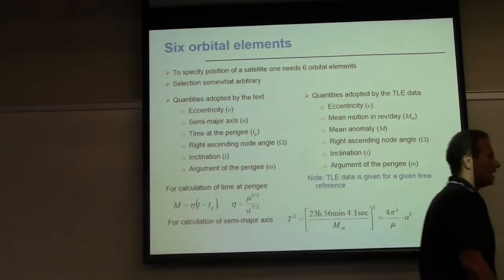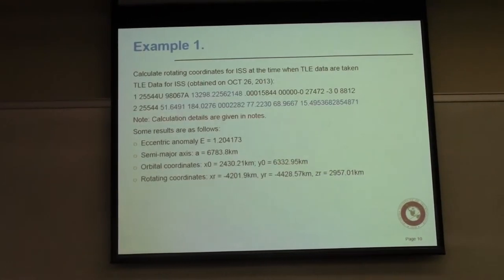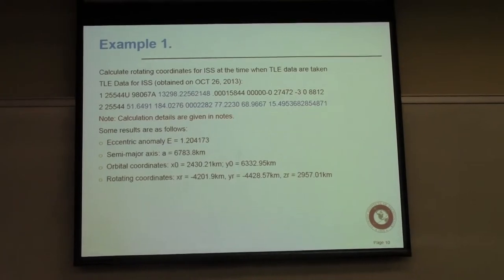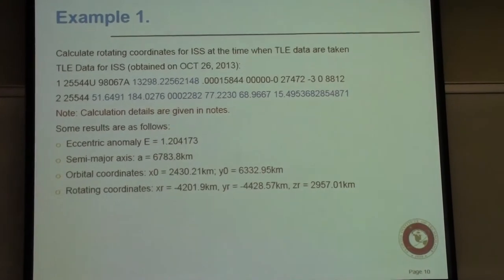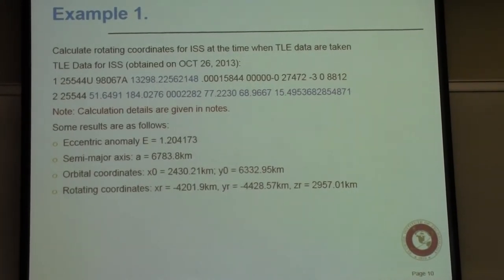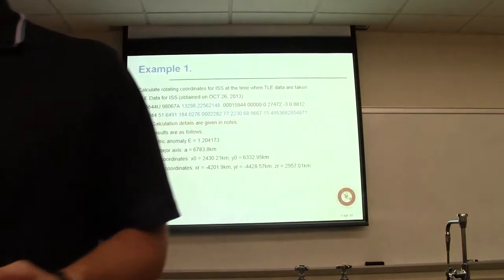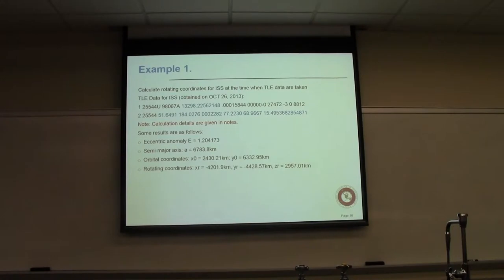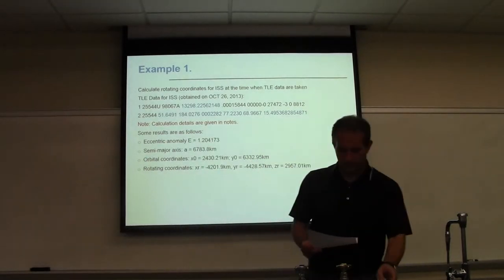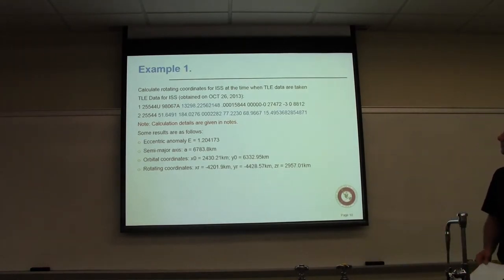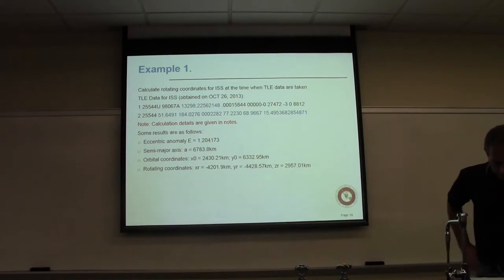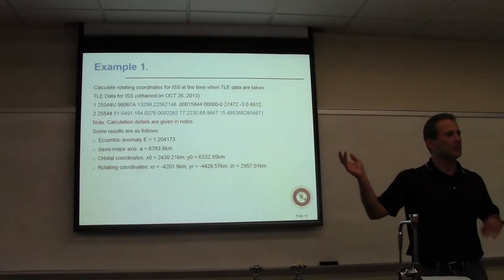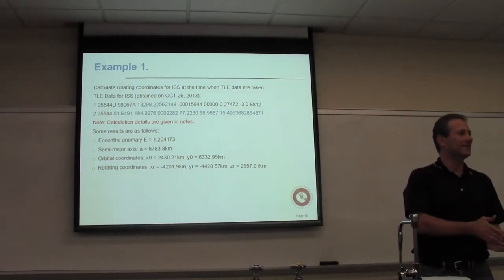Let me continue with the example. Note on φ₀: as mentioned in the last class, it is not a unique value — two angles can have the same cosine. When calculating φ₀, compare the two candidate values against the mean anomaly and choose the one closer to the mean anomaly. Converting r₀ and φ₀ to rectangular coordinates: x₀ = r₀·cos(φ₀) = 6782.34 × cos(1.204386) = 2430.21 km; y₀ = r₀·sin(φ₀) = 6782.34 × sin(1.204386) = 6320.95 km; z₀ = 0.